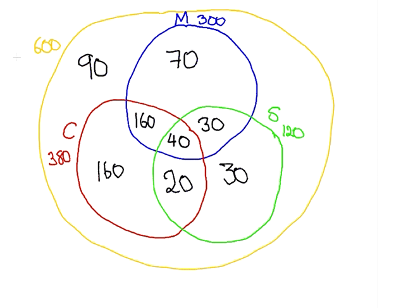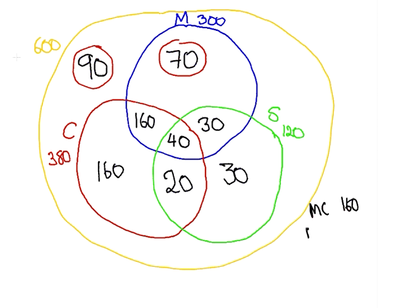Let's recap. How many students are taking no courses from Mathematics, Statistics, or Computing? 90. How many students are taking Mathematics but not Computing or Statistics? 70. For exactly two subject areas: Mathematics and Computing is 160, Mathematics and Statistics is 30, and Computing and Statistics is 20. Altogether, we have 210 students who are taking subjects in exactly two subject areas.